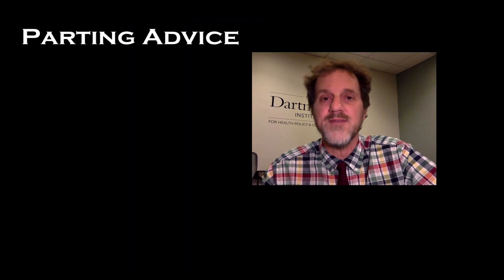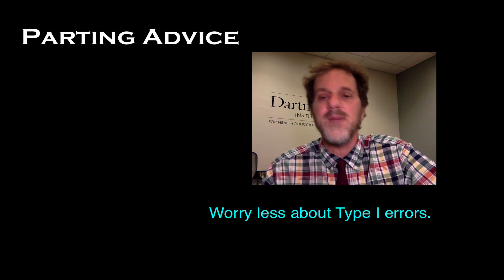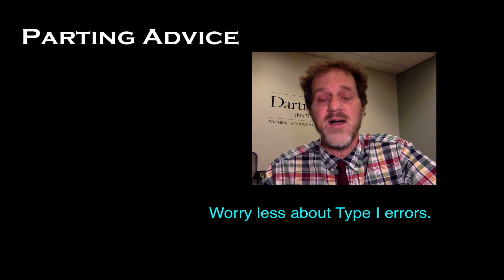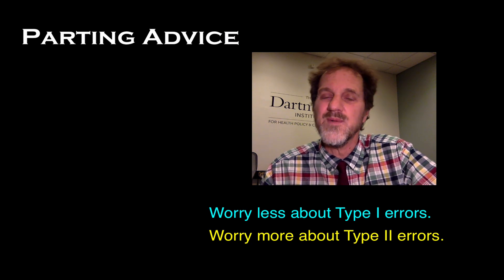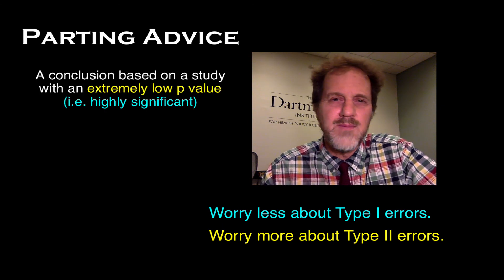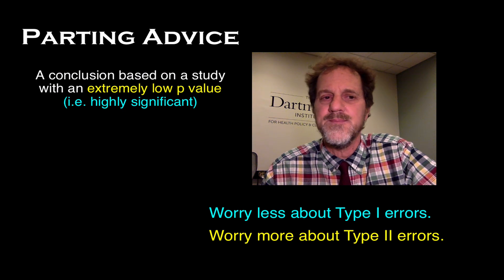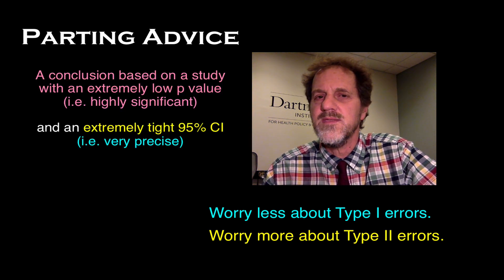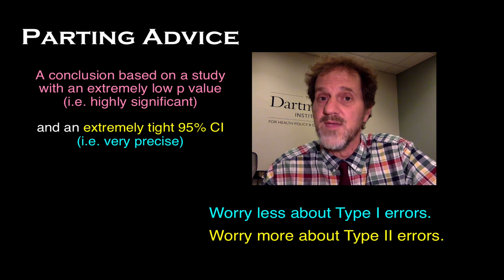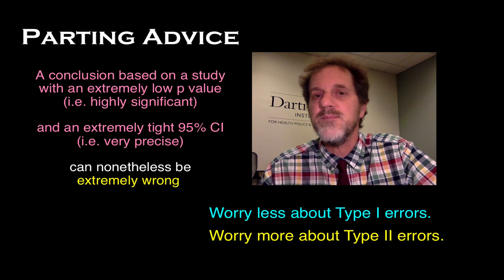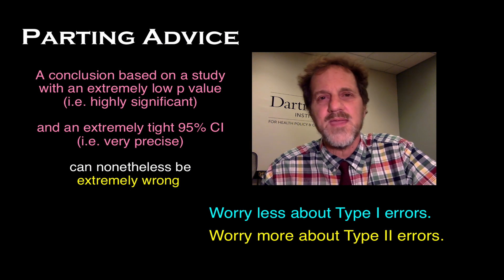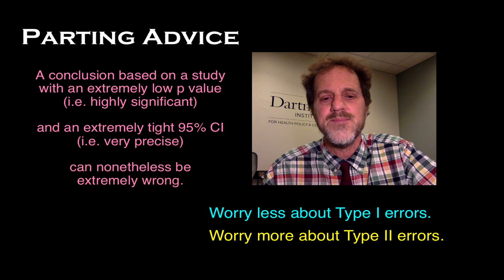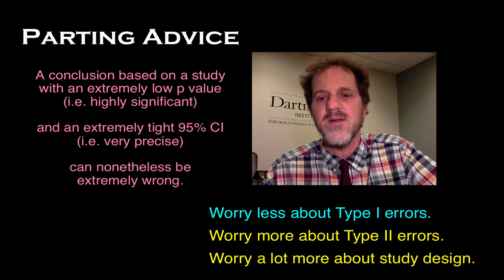A little parting advice: Worry less about type 1 errors — by convention, they happen less than 5% of the time. Worry more about type 2 errors — that's where you really have to think. A conclusion based on a study with an extremely low p-value and an extremely tight 95% CI can nonetheless be extremely wrong — but not because of a type 1 error. It's because of something about the study design. That's why I want you to worry a lot more about the study design. I hope this helps.